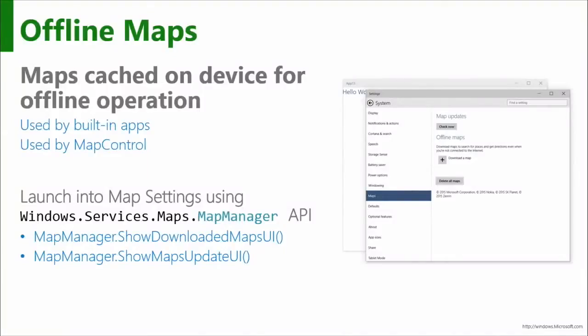There's a ShowDownloadMapsUI, which just takes you to the UI where you can choose which particular map you want to download. And then there's an UpdateUI. You can actually go and check to see whether any of the maps you've already got offline have any updates available. Using this scheme seems great — show us how it works.